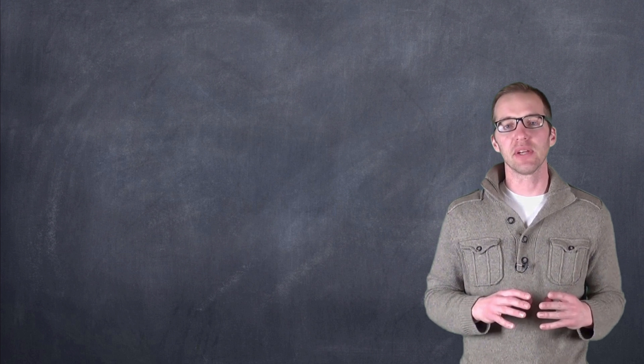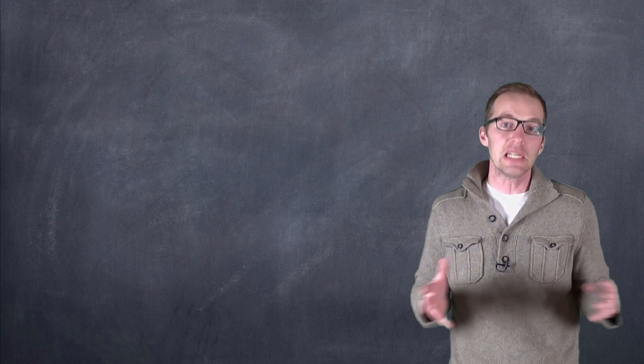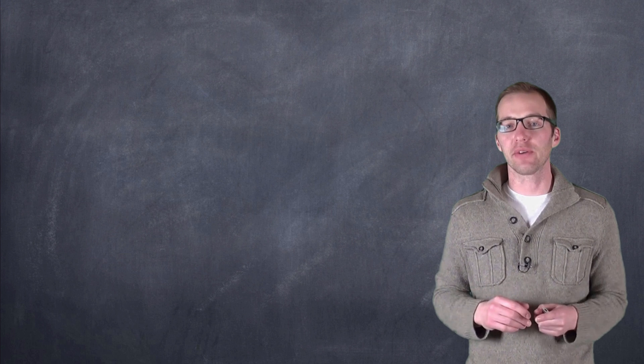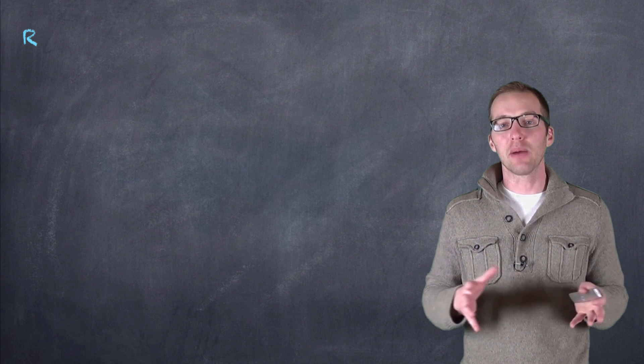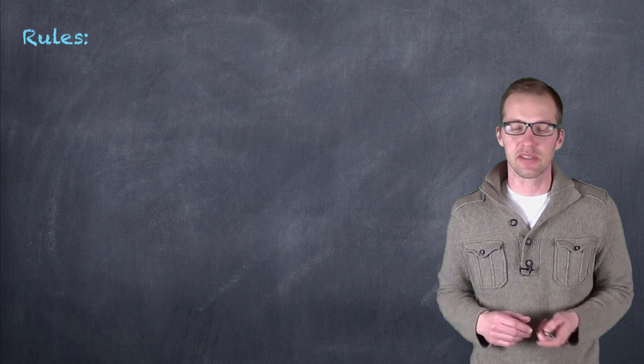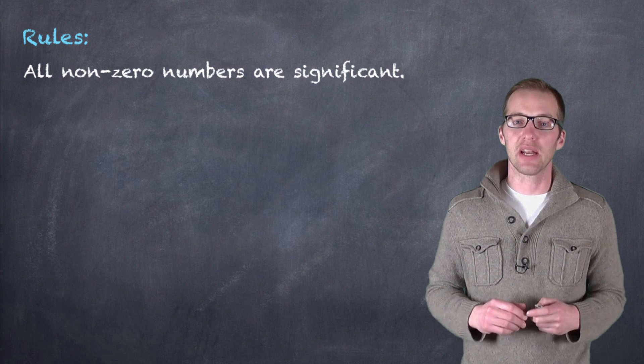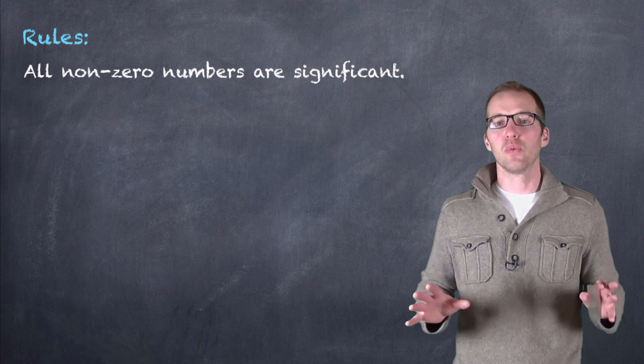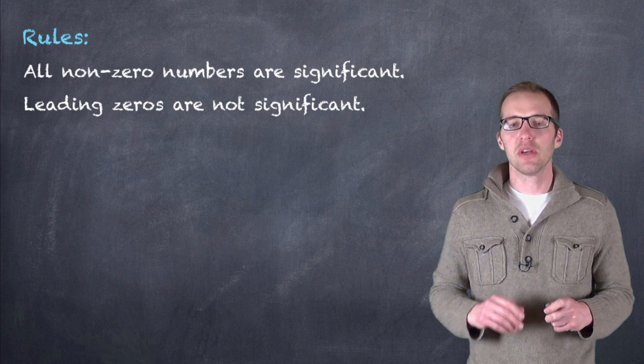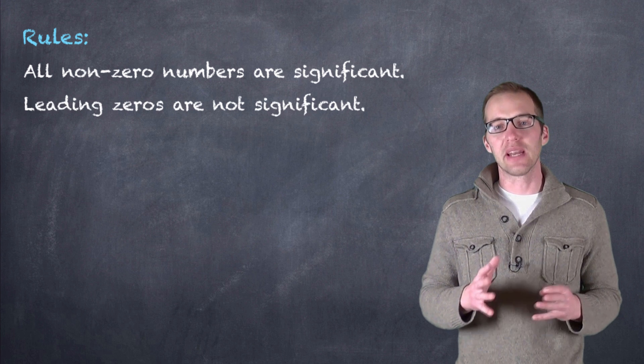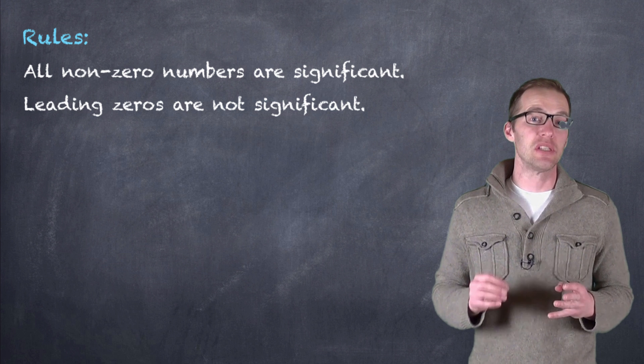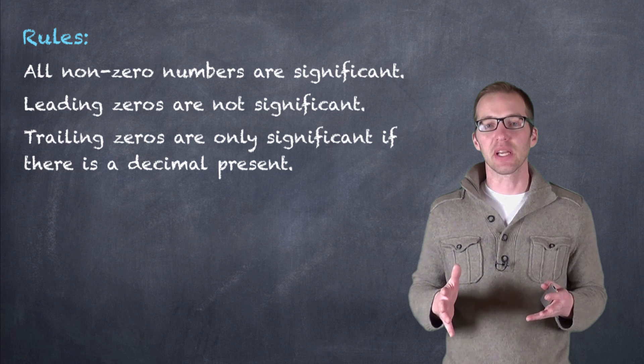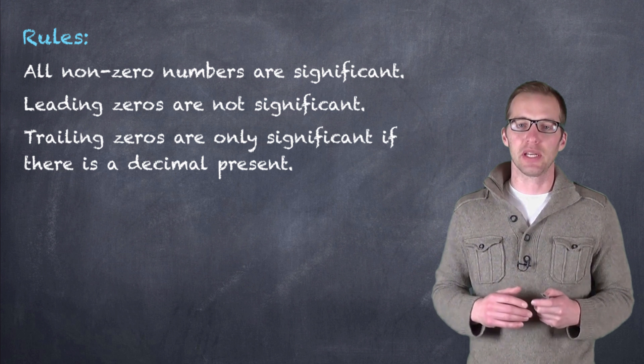Now, how do we assign significance to numbers in a number? That is, how do we determine how many significant digits or how many significant figures are in a value? Well, really, if the number is a non-zero, we consider it significant. It's when we have zeros added in that it gets a little tricky. Generally, the rule is if zeros are placeholders, we do not count them as being significant. We tend to say that leading zeros, that is zeros that appear in front of the first non-zero, are not significant. And trailing zeros are only significant if there's a decimal place present.